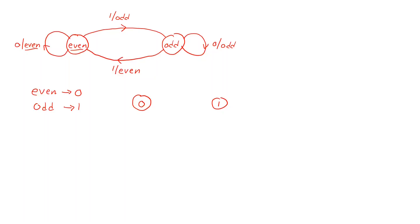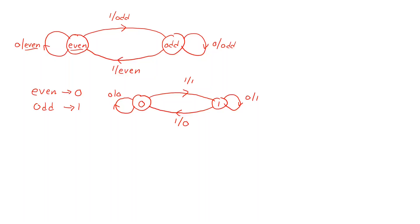So if we are in the state we now call zero and get a zero as input, we get a zero as output as well. If we have a one as input, we get a one as output. In the state we now call one, if we have a zero as input we have a one as output, and if we have a one as input we will have a zero as output. Now we have a state transition graph using only digital notation for both the state names and the outputs.